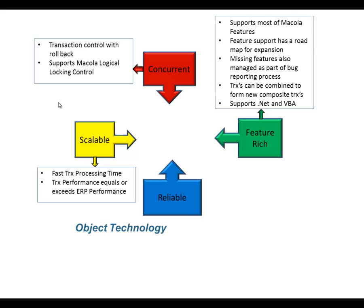Rich feature set support is really important. It's one thing to create a basic order with some allocation records, but there are lots of features that make up order entry — how it handles pricing, several different ways of commission calculations, regular tax codes versus tax schedules, and different types of terms management. These features are parameterized throughout Macola in the OE, inventory, and purchase order products. Our feature sets are very robust, and we are working on a roadmap to continue expanding them. Features are also added through our bug reporting process — sometimes customers find missing features that we simply add as part of supporting our customer base.